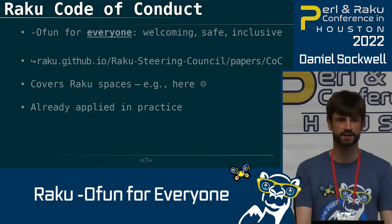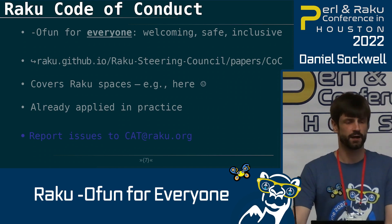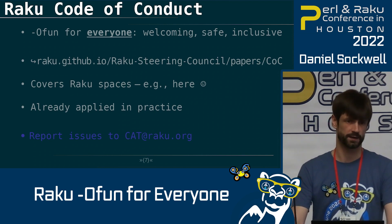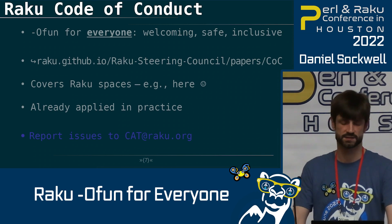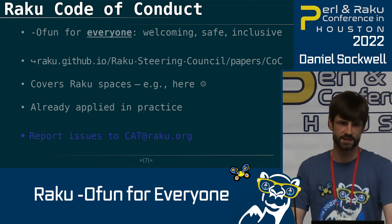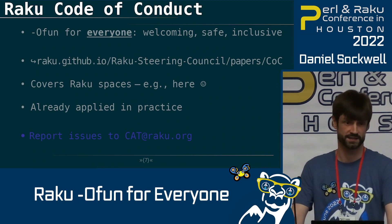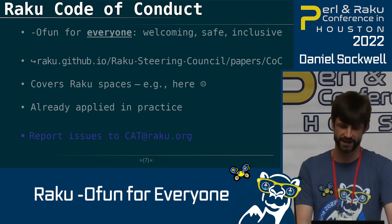The code of conduct has been applied in practice — so far so good, although I don't want to jinx anything. There are various ways you can help with the code of conduct. You can suggest changes as with any living document. But the big thing we really need help with is: if there is any conduct that violates the code of conduct, please report it. As President Obama described the Declaration of Independence, the truths may be self-evident but they're not self-enforcing. The code of conduct is not self-enforcing — it's some words that aren't worth anything if people don't report violations.